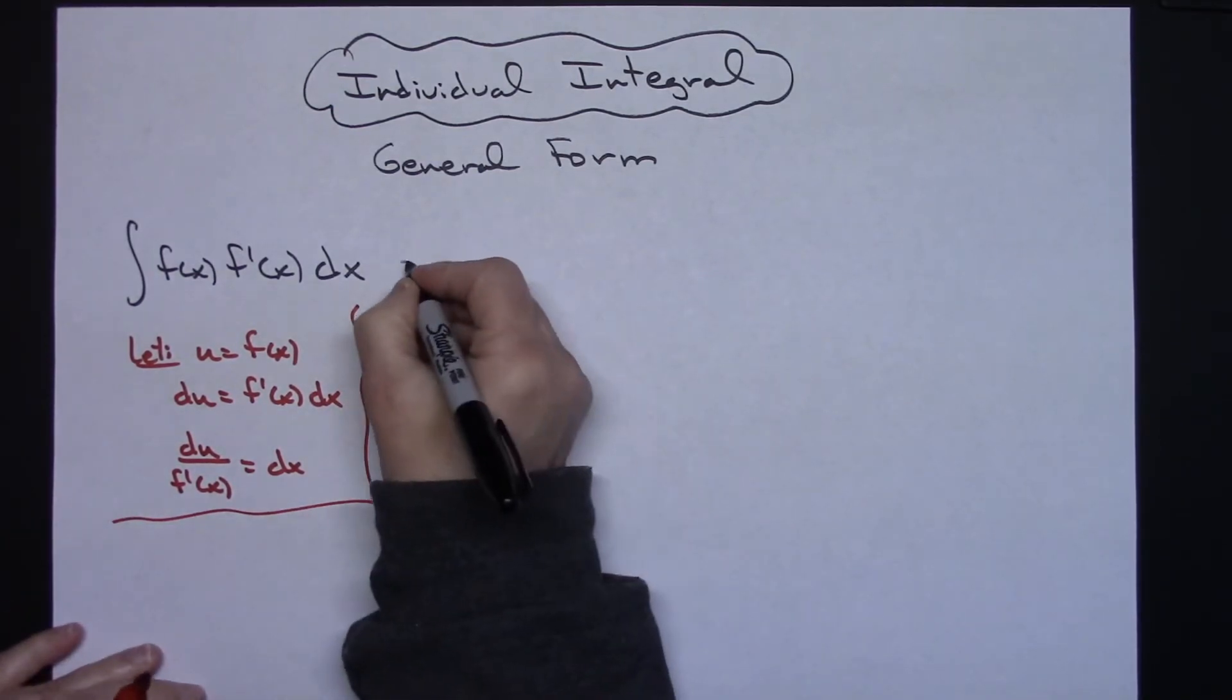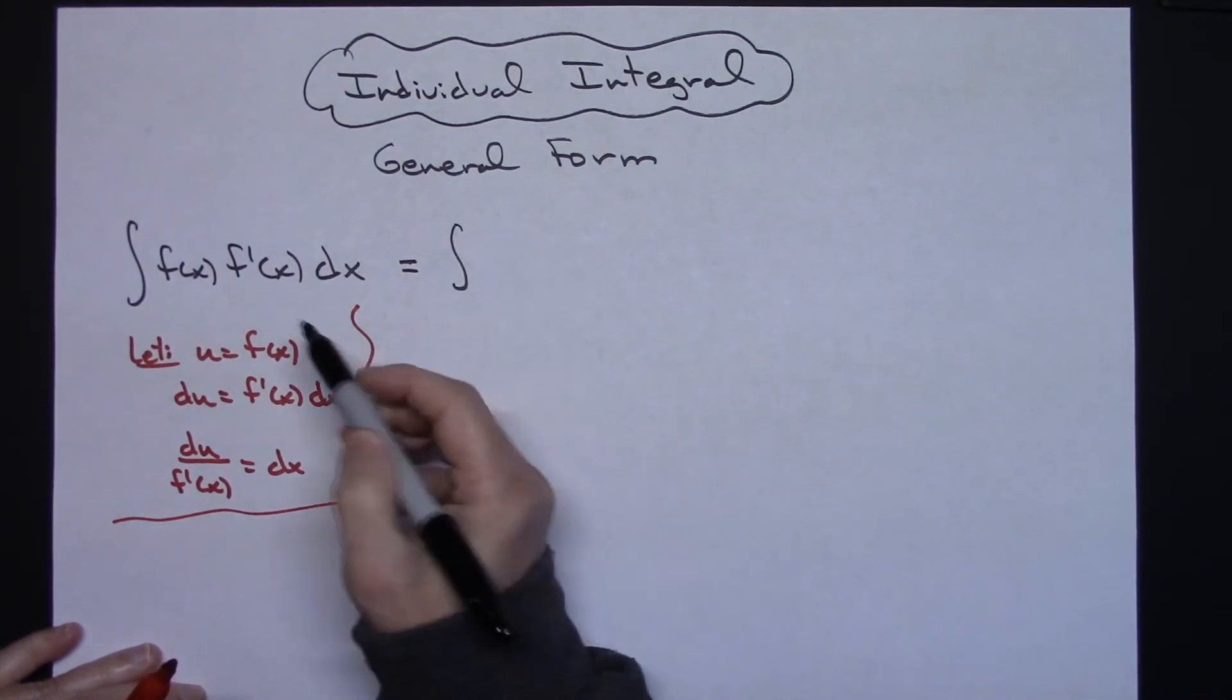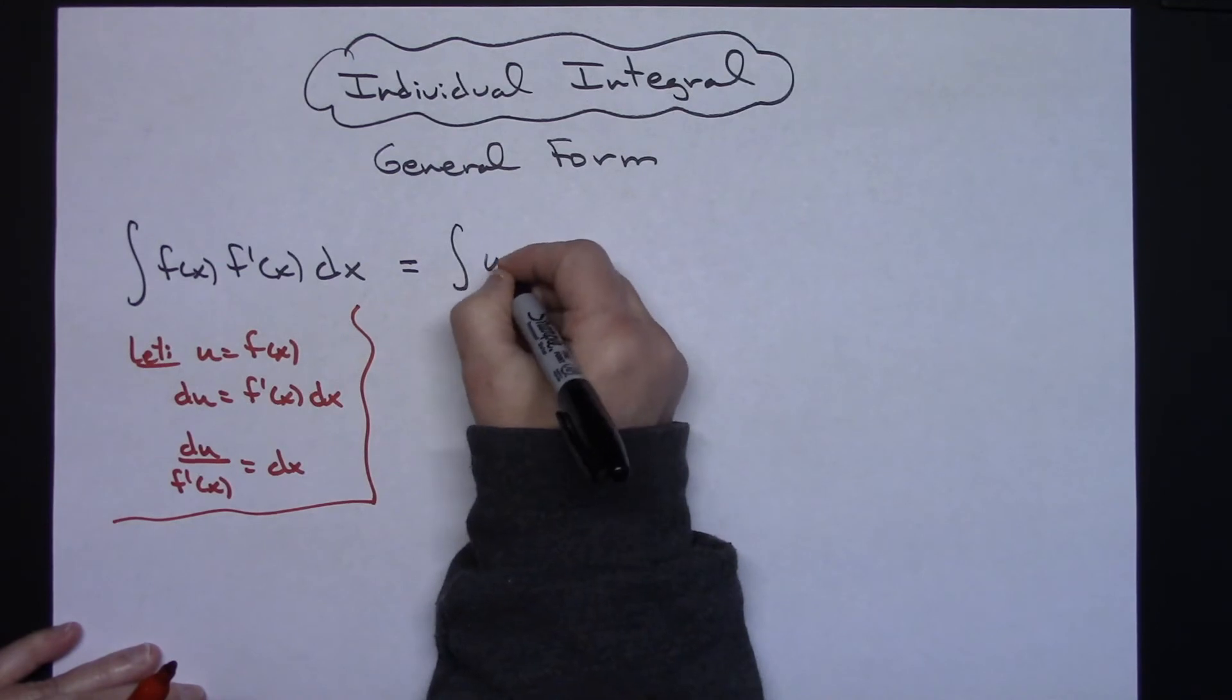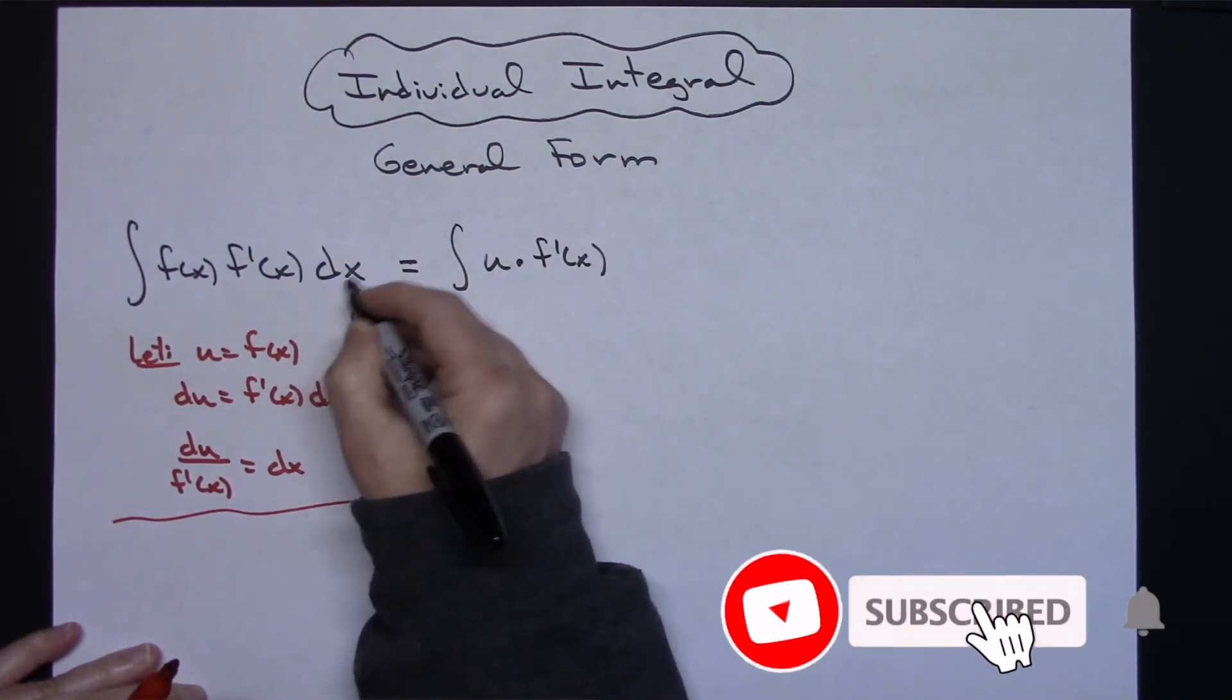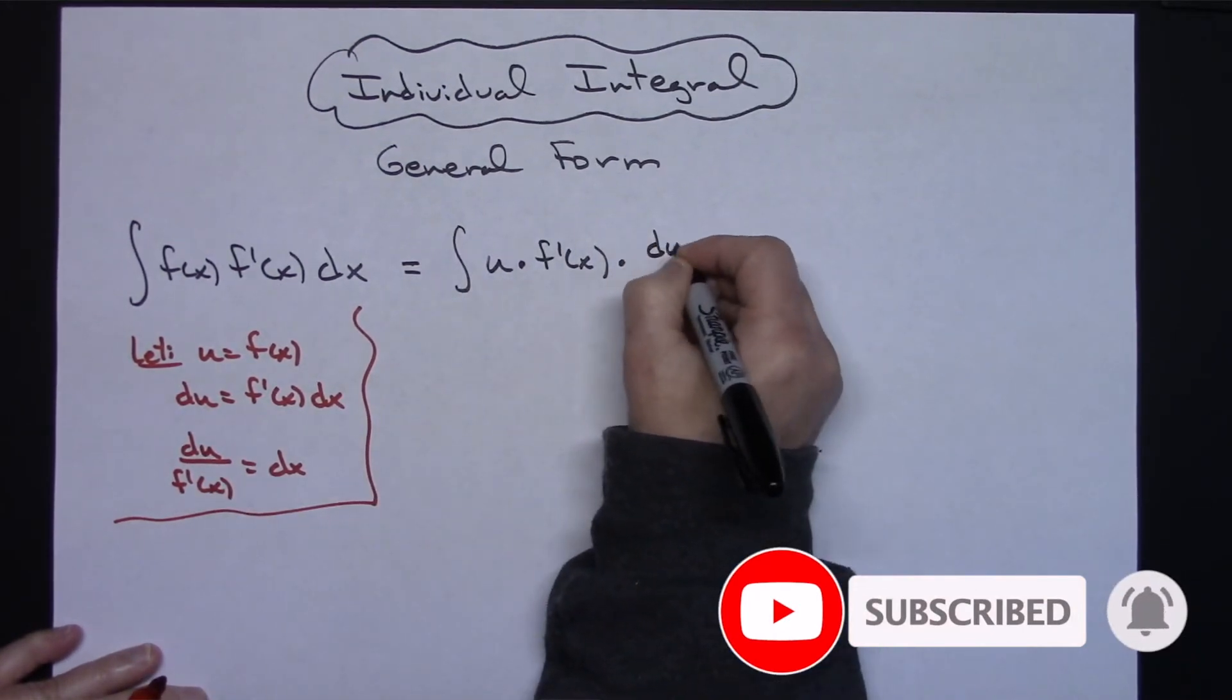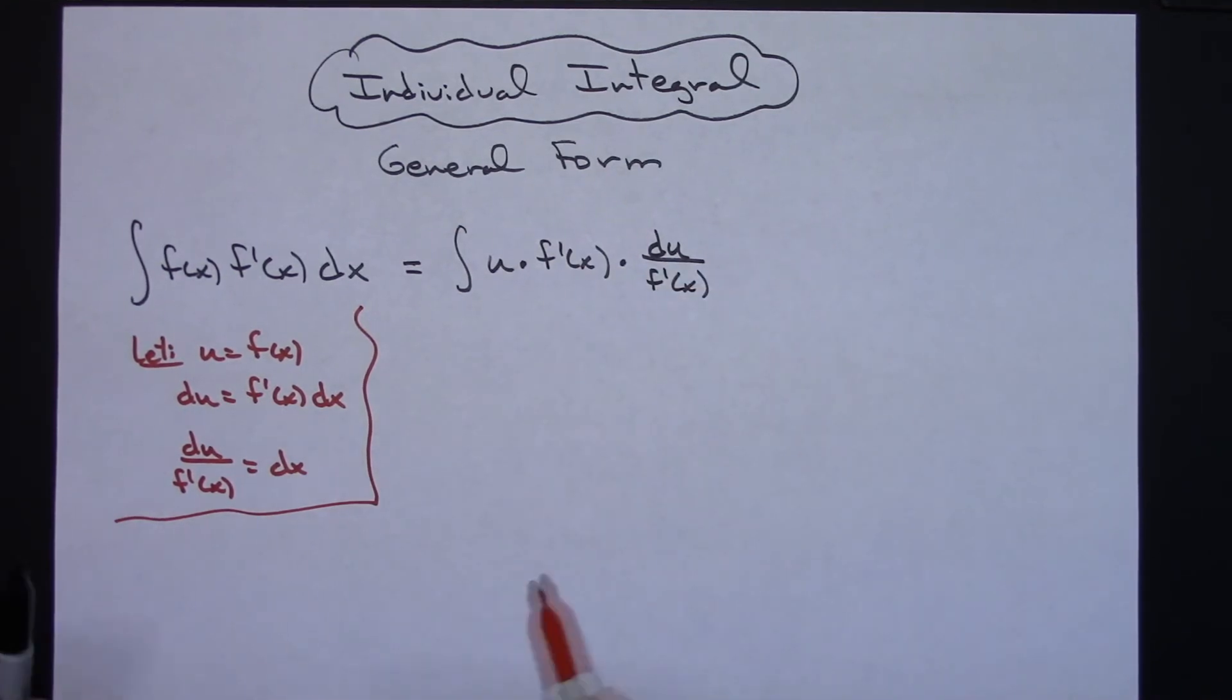Lining that out, I can come up here and substitute back in. I'm going to have the integral, I'll make that substitution u for the f of x so I'll have u times the f prime of x. Substituting for dx, we'll have du over f prime of x.